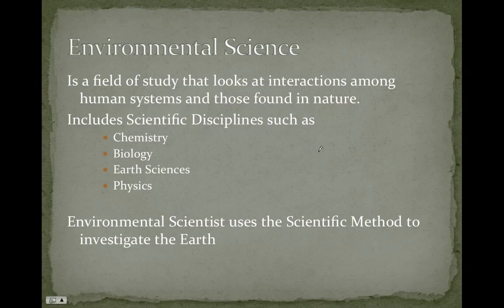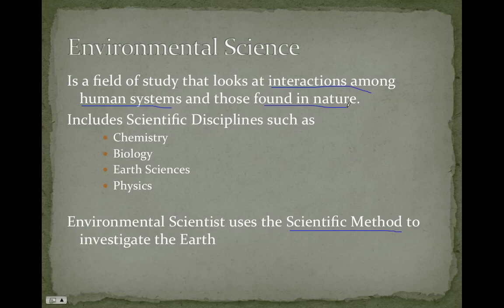So, environmental science. The important thing about environmental science is that it is a science — we use the scientific method. This is very important to understand. We use the scientific method to investigate the Earth and understand the interactions of things. It's a study that looks at the interactions among human systems and those found in nature, to determine whether things are going well or whether things are being harmed. Environmental science includes these disciplines as well: chemistry, biology, earth science, and physics.